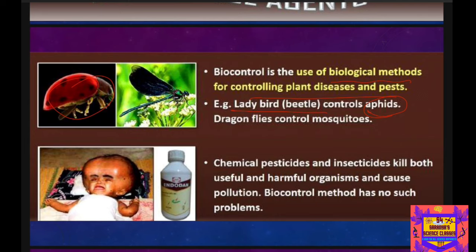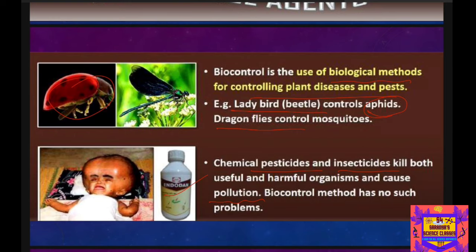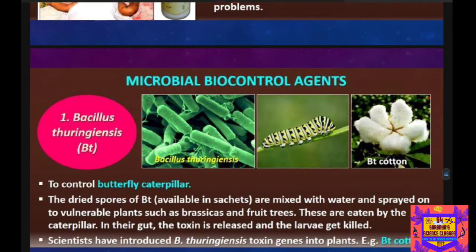There are many chemical pesticides and insecticides such as endosulfan that kill both useful and harmful organisms, creating pollution. The biocontrol method does not have such problems — it will not create any pollution to the environment or harm other useful organisms. That is why we prefer biocontrol agents.